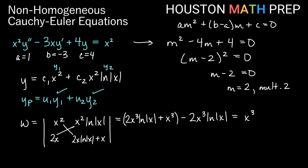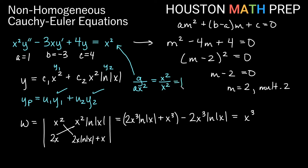Before building W1 and W2, we divide through by x squared. Since g is x squared and a is 1, g over ax squared is x squared over x squared, which equals 1. So the replacement column for our Wronskians is just 0 and 1. For W1, we replace the first column with 0 and 1, keeping the second column, and compute the determinant to get negative x squared ln of x.